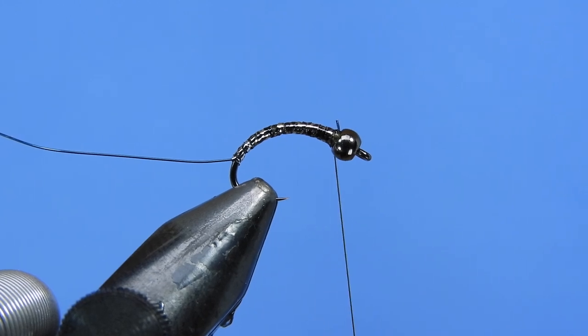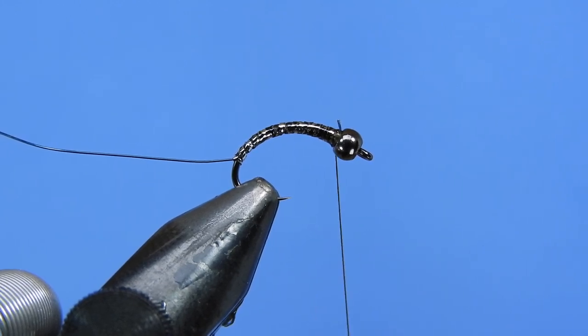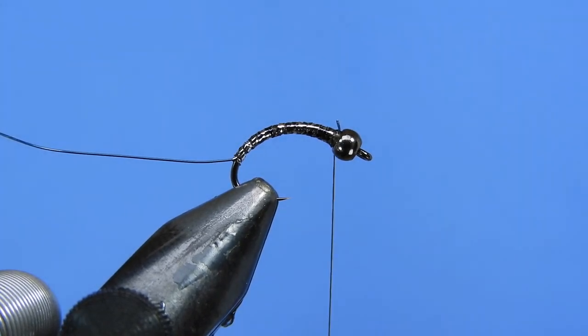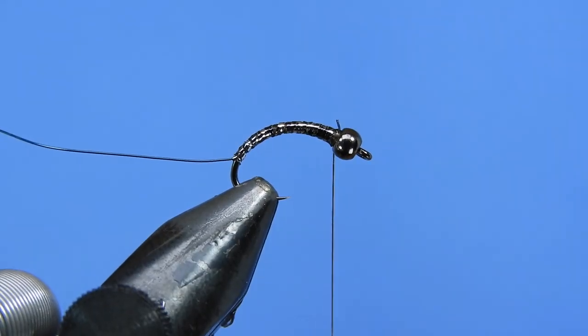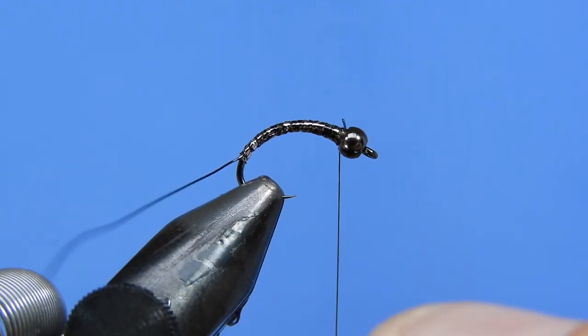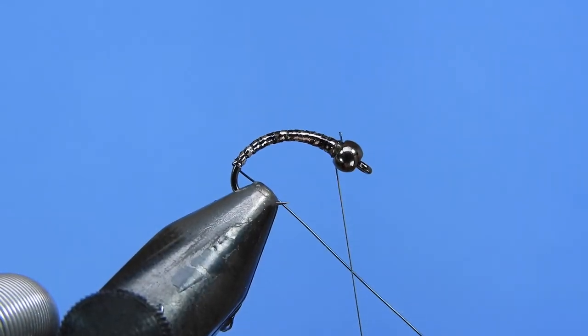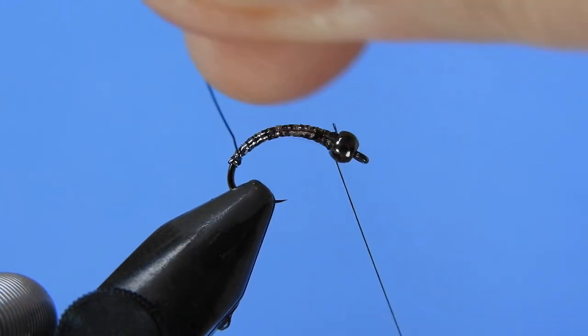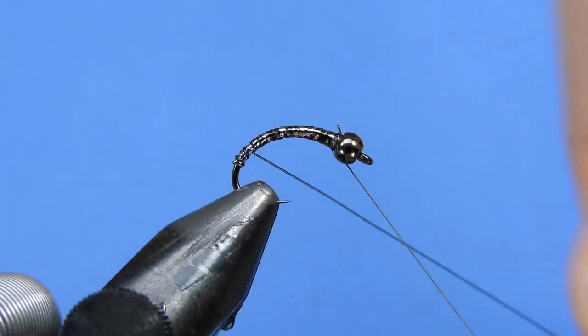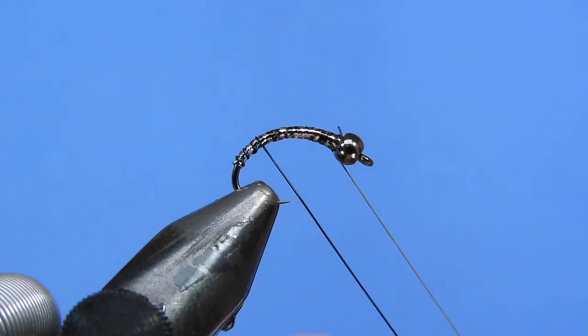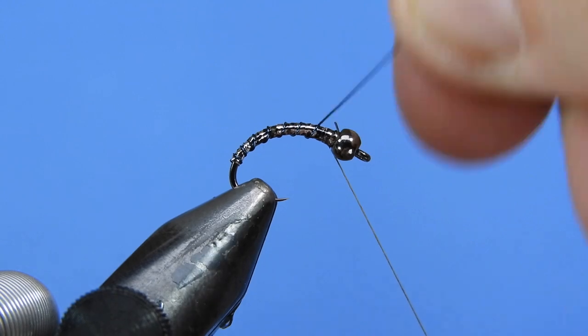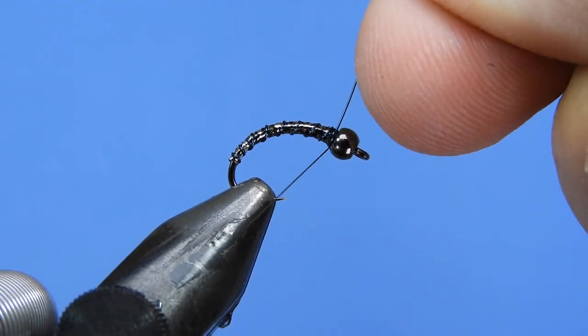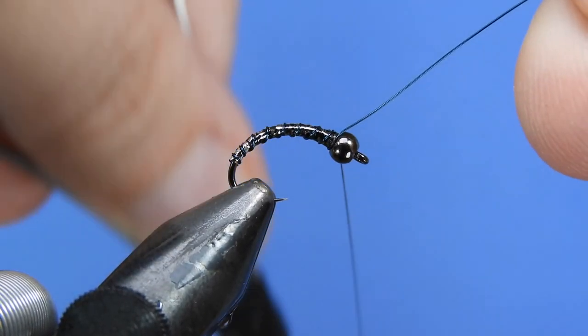Now we're going to go ahead and wrap our wire body and this will serve two purposes. First, it's going to add a little bit of segmentation to the fly, and secondly, it's going to add a little bit of durability to the fly as well. So you can either wrap that along the same route that you wrapped your tinsel body or you can reverse wrap it. If you do a reverse wrap in the opposite direction, you'll add even more durability to the fly.